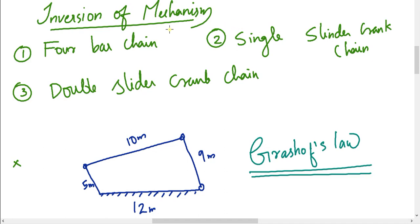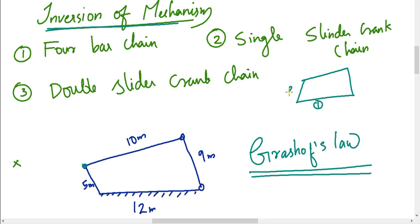Inversion of Mechanism. In a 4-bar chain, we fix each link one at a time to get different mechanisms. We can fix link 1, 2, 3, or 4. By fixing each link, we change the type of mechanism obtained. That process is called Inversion.